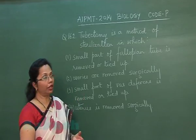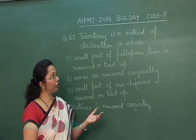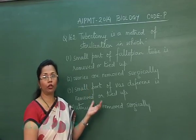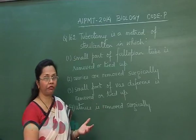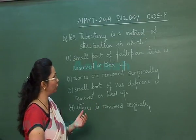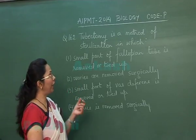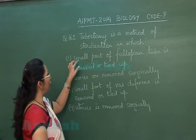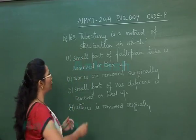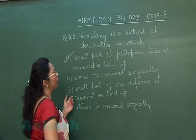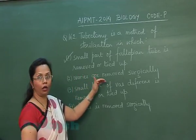Question 162: Tubectomy is a method of sterilization in which — tubectomy is a terminal method of contraception prescribed to females who have completed their families. In this procedure, the fallopian tubes are cut and their ends are tied. So the correct answer is: a small part of the fallopian tube is removed or tied up.